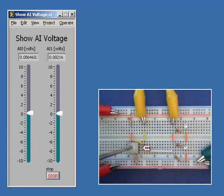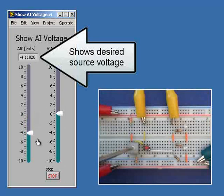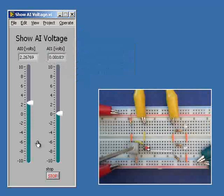Note that I'm watching the voltage developed by the voltage divider circuit. This shows the desired source voltage. You'll notice that when nothing is connected to this circuit, I can sweep it through its full range of minus 10 to plus 10 volts.